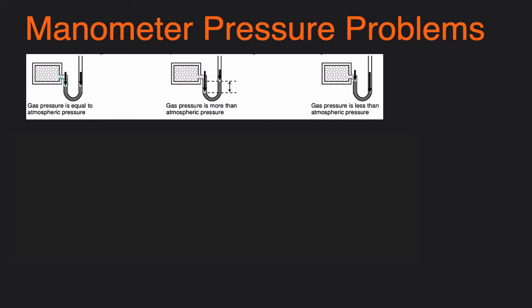You can think of the gas exerting a downward pressure, and the atmosphere is also exerting a downward pressure. You can compare the levels of the mercury. If the levels on both sides are the same, that means the pressure of the gas will equal the pressure of the outside atmosphere. But if the level on the gas side is lower than the level on the atmosphere side, that means the gas is exerting a stronger downward pressure than the atmosphere.